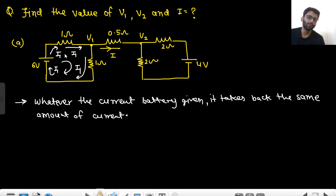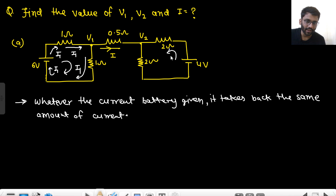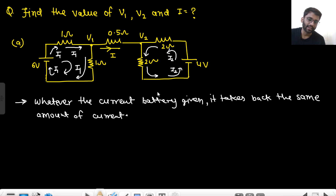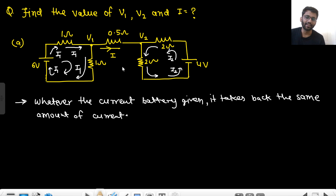Since this complete current is flowing in this loop only, there should be no current going that other way. Similarly, let's assume the other battery is giving you I2 current — it will take back the same amount I2. So the complete I2 current is flowing in that loop and complete I1 current is flowing in this loop. That means there is no current in the 0.5 ohm resistance, so the value of I is 0 ampere.